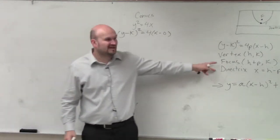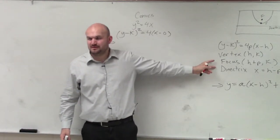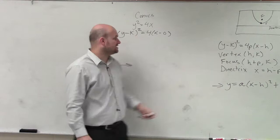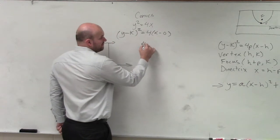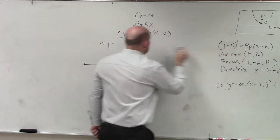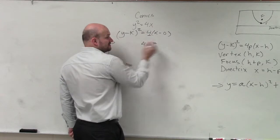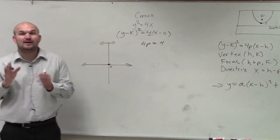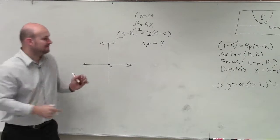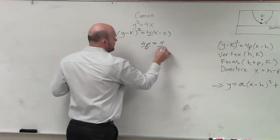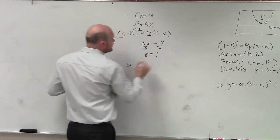Now, I don't have these memorized. The only way I find the focus in the vertex is I know that 4p is equal to this coefficient, which is 4 in this case. And all I want to do is find the value of p. So if I divide by 4, p is equal to 1. You guys agree with me?